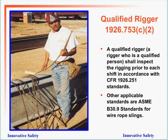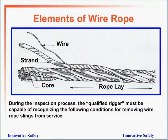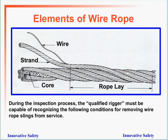Qualified riggers: a qualified rigger shall inspect the rigging prior to each shift in accordance with CFR 1926.251 standards. Other applicable standards include the ASME B30.9 standards for wire rope slings. During the inspection process, the qualified rigger must be capable of recognizing the elements of a rope — the wire, the strand, the core, and the rope lay — and whether any of them are damaged.